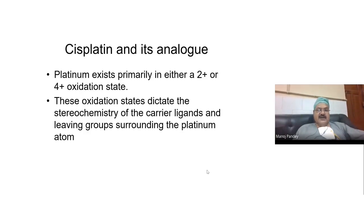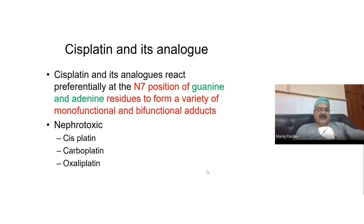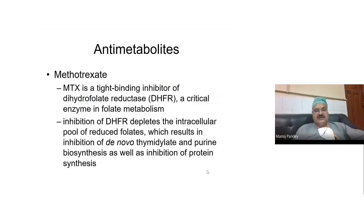The second class is cisplatin and its analogs. These are drugs which have platinum in a 2+ or 4+ oxidation state, and it is the oxidation state which decides the stereochemistry of the carrier ligands. They act at the N7 position of guanine and adenine residues to form monofunctional and bifunctional products. Drugs are cisplatin, carboplatin, and oxaliplatin. Cisplatin is highly nephrotoxic and hyperemetic, while carboplatin and oxaliplatin are less nephrotoxic and less emetic.